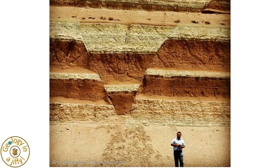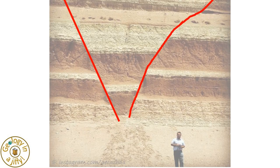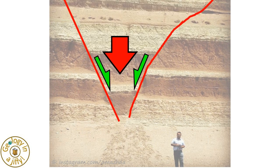In this cliff cross section, we see the two parallel normal faults, the central graben which has dropped downwards in relation to the two foot walls as they moved apart.